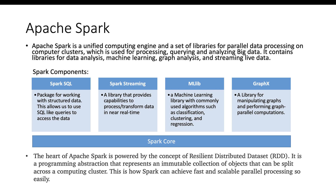Some of the most important Spark components include Spark SQL, which is a package for working with structured data — it allows us to use SQL-like queries to access the data. Spark Streaming lets you process and transform data in near real time, which works well for scenarios like streaming images from an oil spill for real-time analysis. MLlib is a machine learning library with commonly used algorithms such as classification, clustering, and regression. And there is GraphX for manipulating graphs and performing graph-parallel computations.